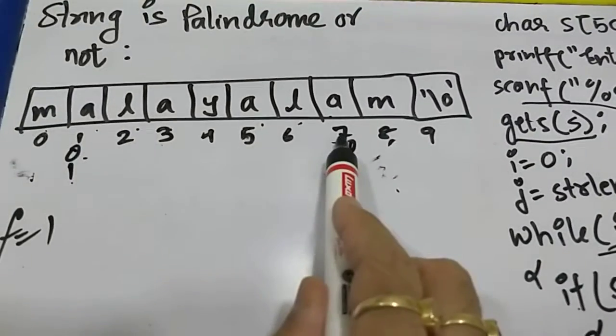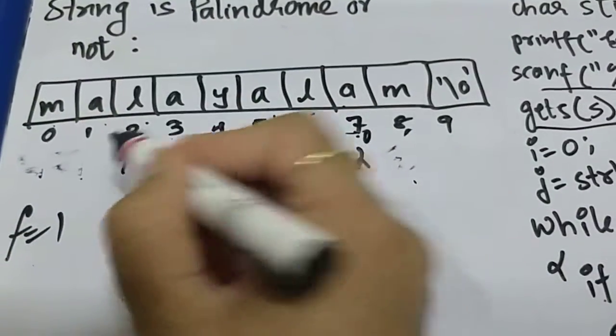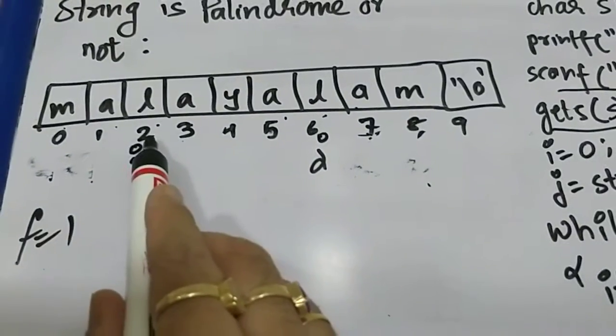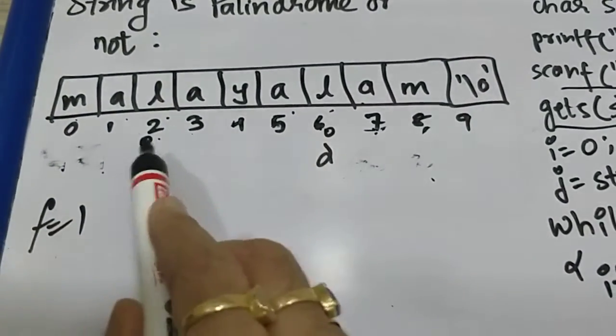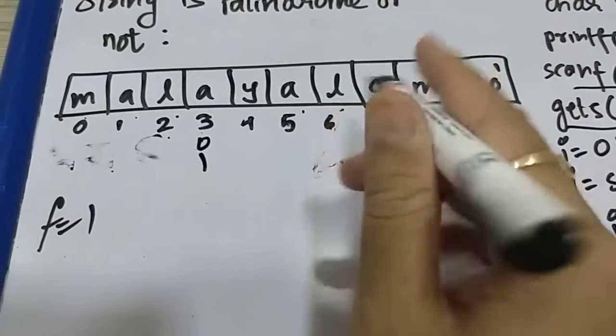And then it will check s of one not equal to s of seven? False, because they are equal. Break nahi hoga, f zero nahi hoga. i plus plus, j minus minus. Next it will check i less than j, two less than six, yes.